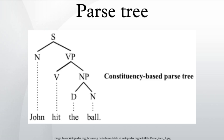The following abbreviations are used in the tree: S for sentence, the top-level structure in this example. NP for noun phrase. The first NP, a single noun John, serves as the subject of the sentence. The second one is the object of the sentence.